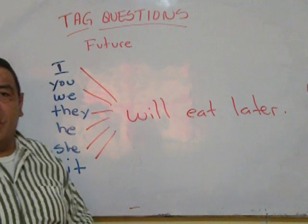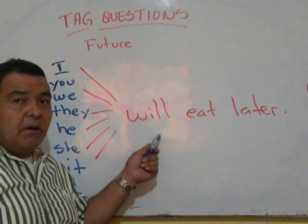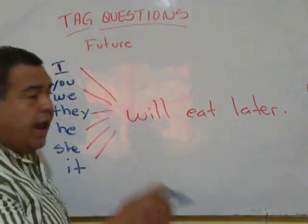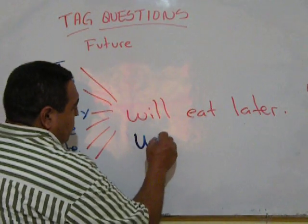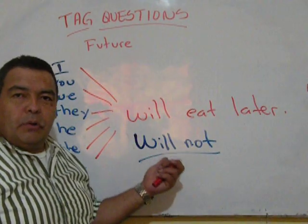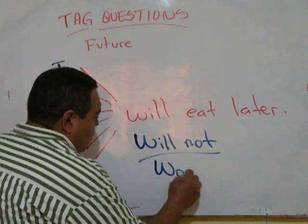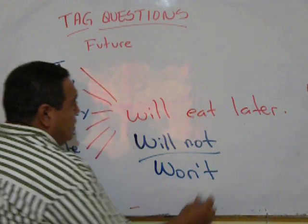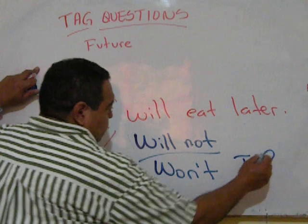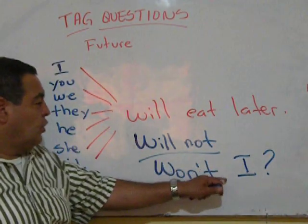Now, let's create a tag question for these. Now this is an affirmative expression, so the tag question has to go in negative, will not. But remember, you have to do it as a contraction, so this is going to go won't.